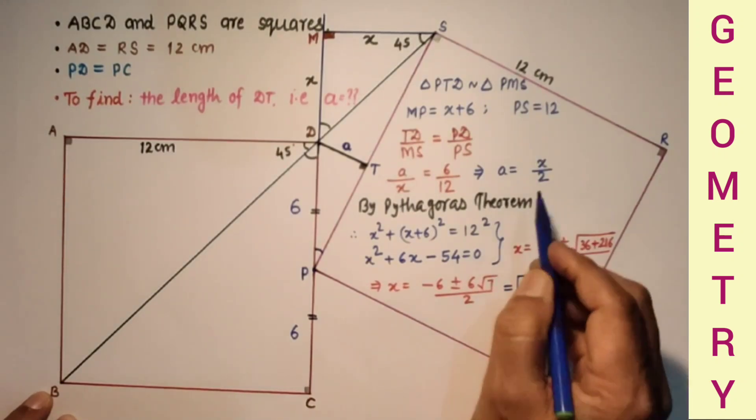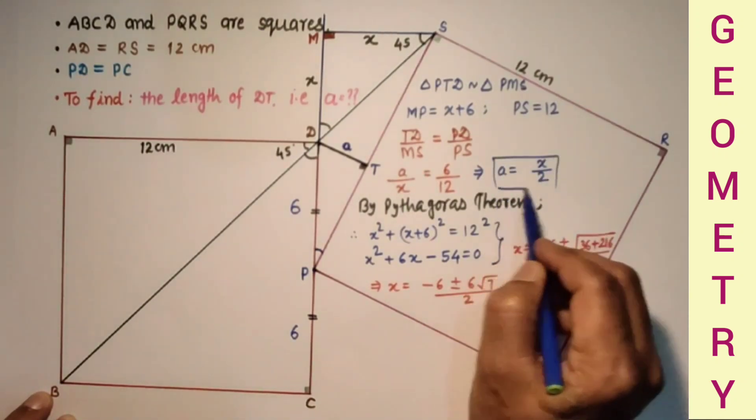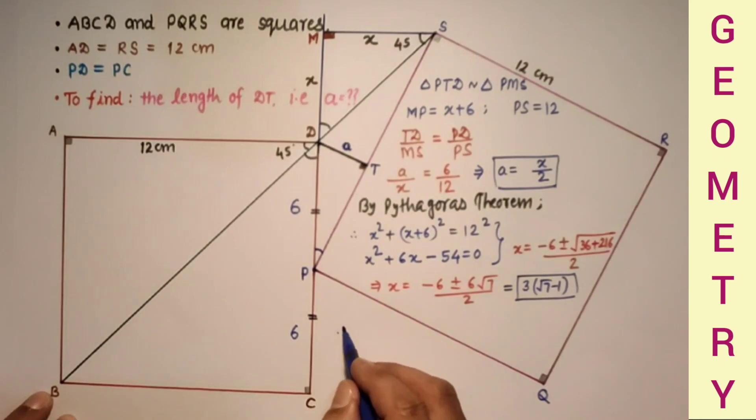And A is X by 2. Therefore required length A is equal to 3 by 2 times (root 7 minus 1).